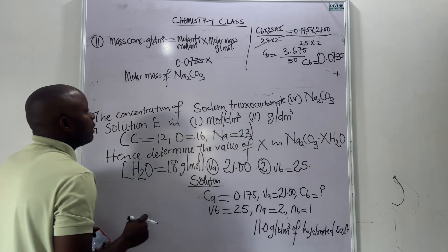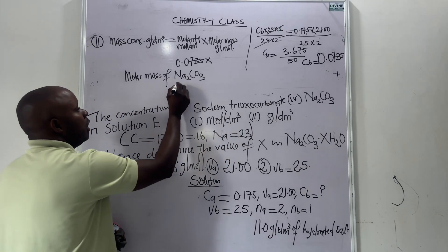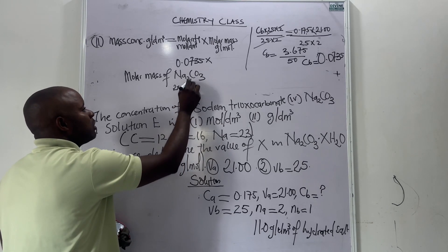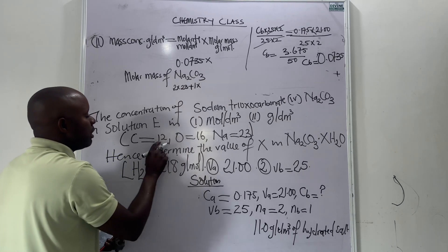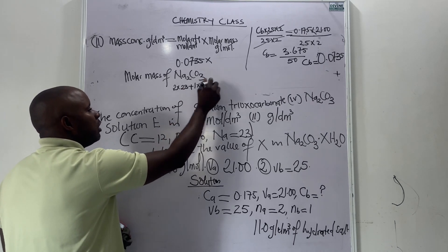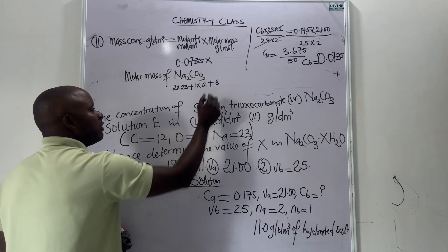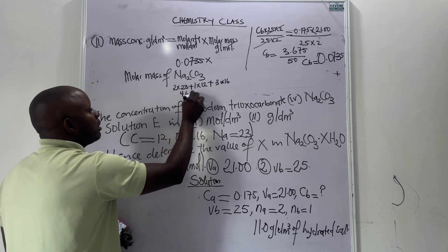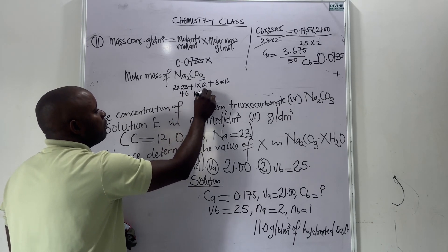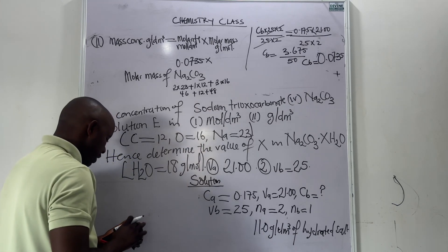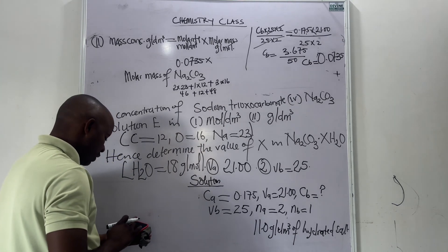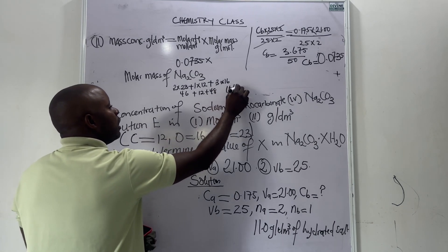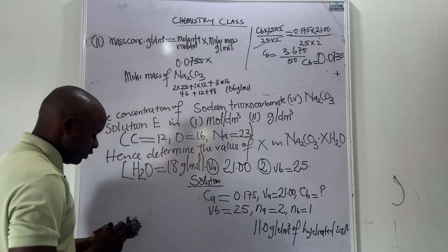The molar mass of Na₂CO₃ is the sum total of the relative atomic masses. Sodium occurs two times, with relative atomic mass 23; carbon occurs once, relative atomic mass 12; oxygen occurs three times, relative atomic mass 16. So we have 2×23 plus 12 plus 3×16, giving 46 plus 12 plus 48, which equals 106 grams per mole. We have now solved for the molar mass of sodium carbonate.